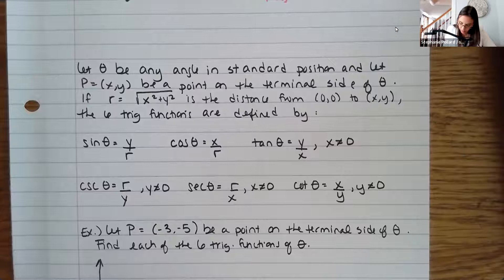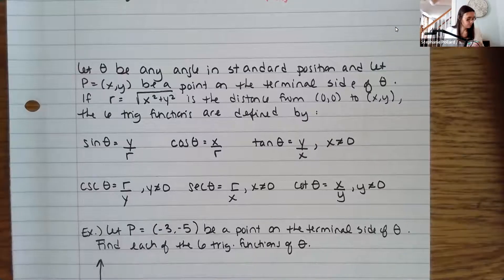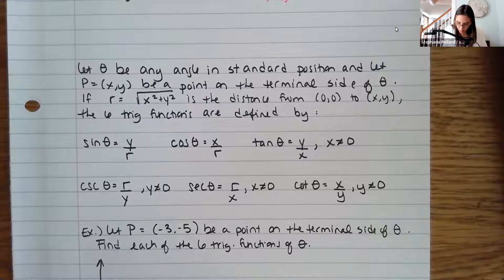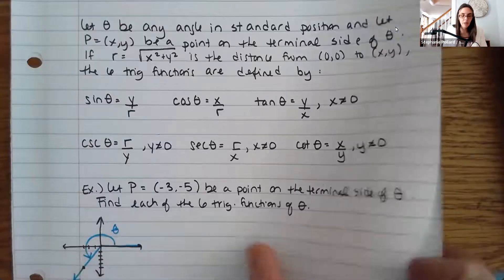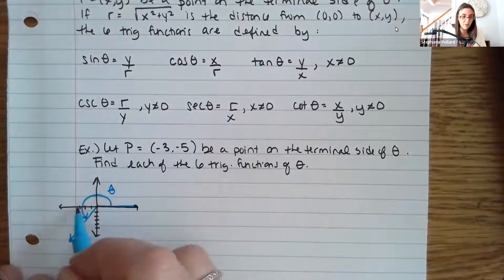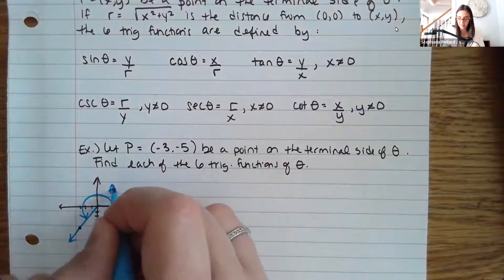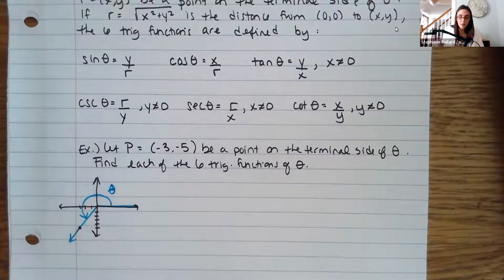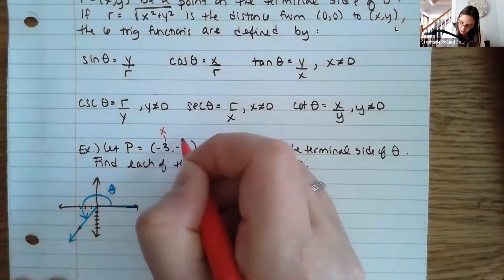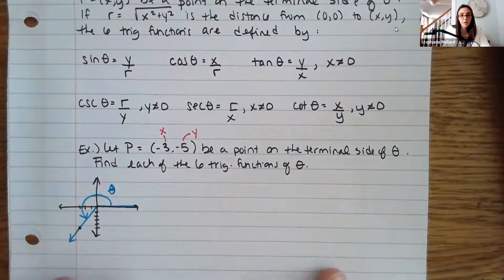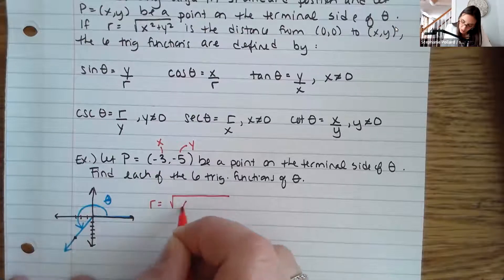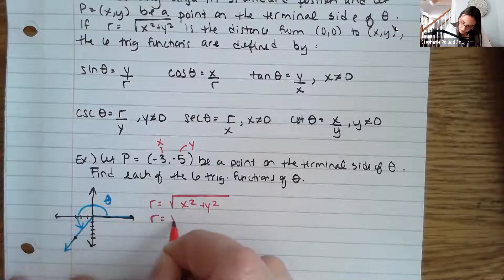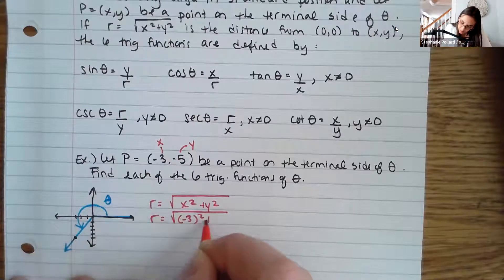What's happening here is that your angle is going from here all the way around — that's your theta. Here's my point, negative 3, negative 5. In this case, your x value is negative 3 and your y value is negative 5. The first thing you want to find is r, because you're going to need it. So r is the square root of x squared plus y squared: the square root of (-3) squared plus (-5) squared.